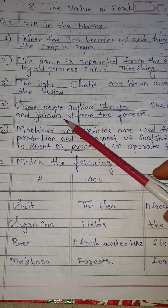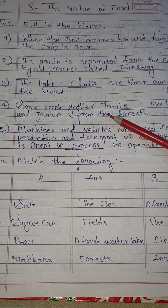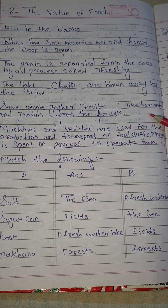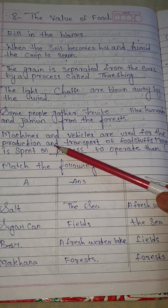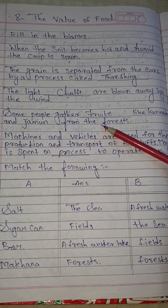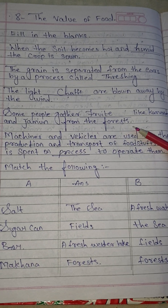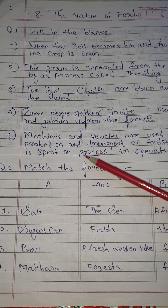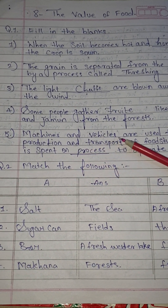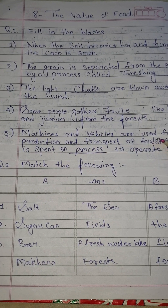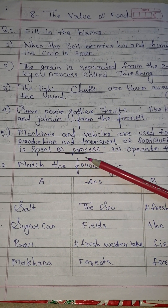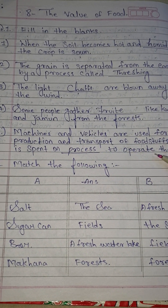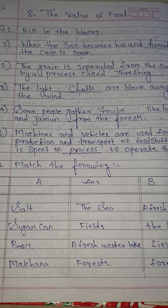Number 4: some people gathered dash like karwanda and jamun from the forest. Answer: fruits. Number 5: machines and vehicles are used for the production and transport of foodstuffs.